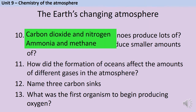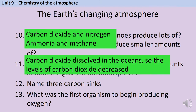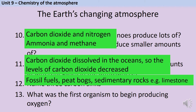As the Earth cooled down and the first oceans formed, carbon dioxide began to dissolve in those oceans, so the amount of carbon dioxide went down. Carbon can be locked up in what we call carbon sinks, such as fossil fuels, peat bogs, and sedimentary rocks like limestone. And the first organisms to start producing oxygen were algae.